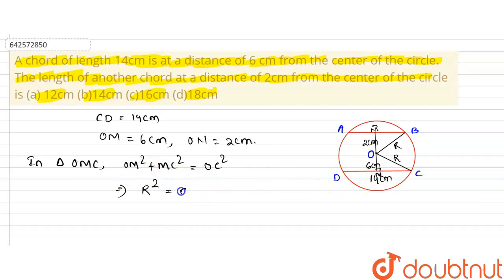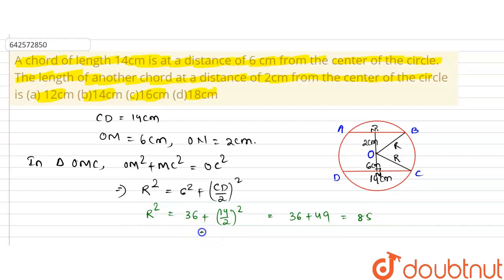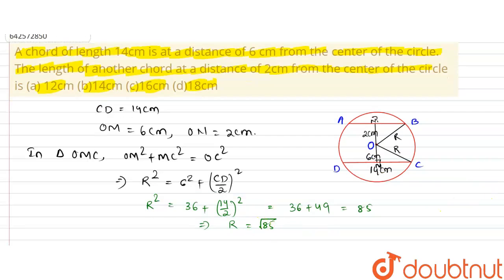Substituting: r² = 6² + (14/2)² = 36 + 7² = 36 + 49 = 85. Therefore r² = 85, and r = √85.